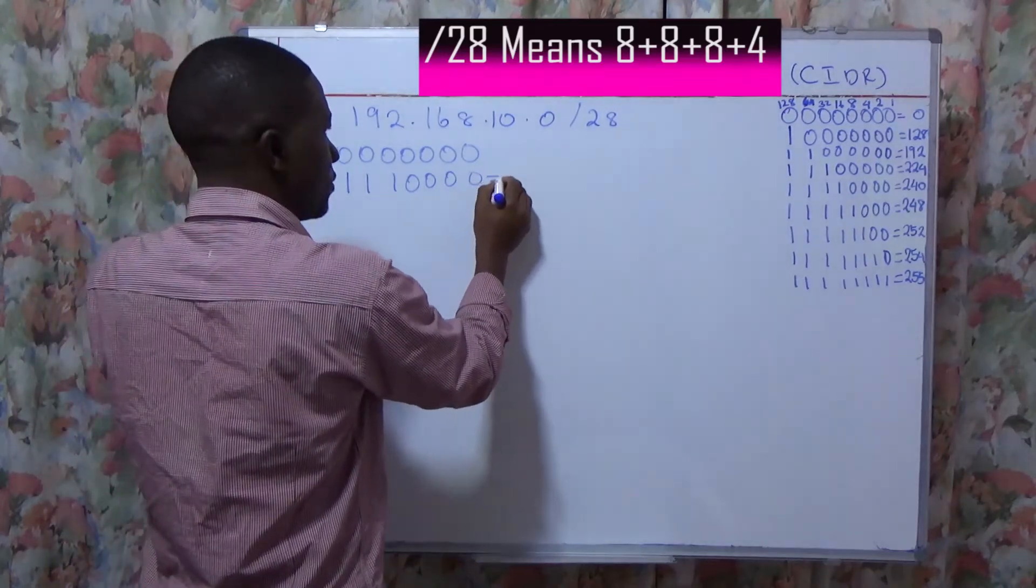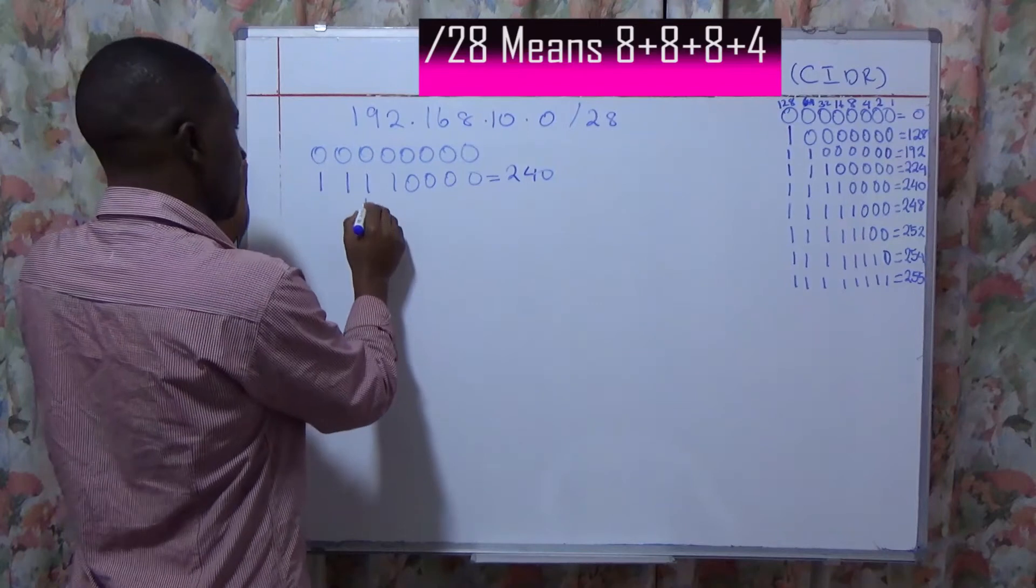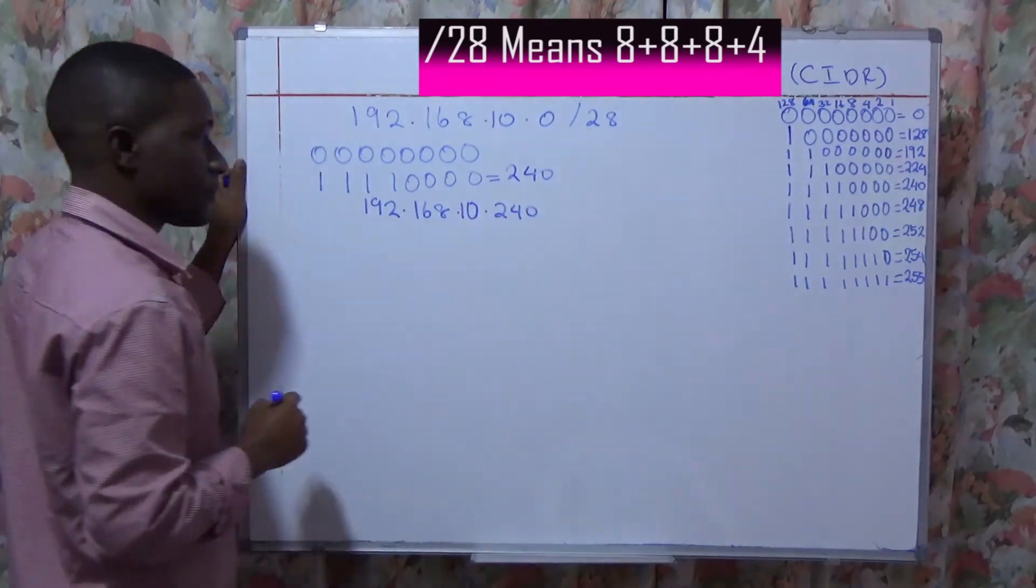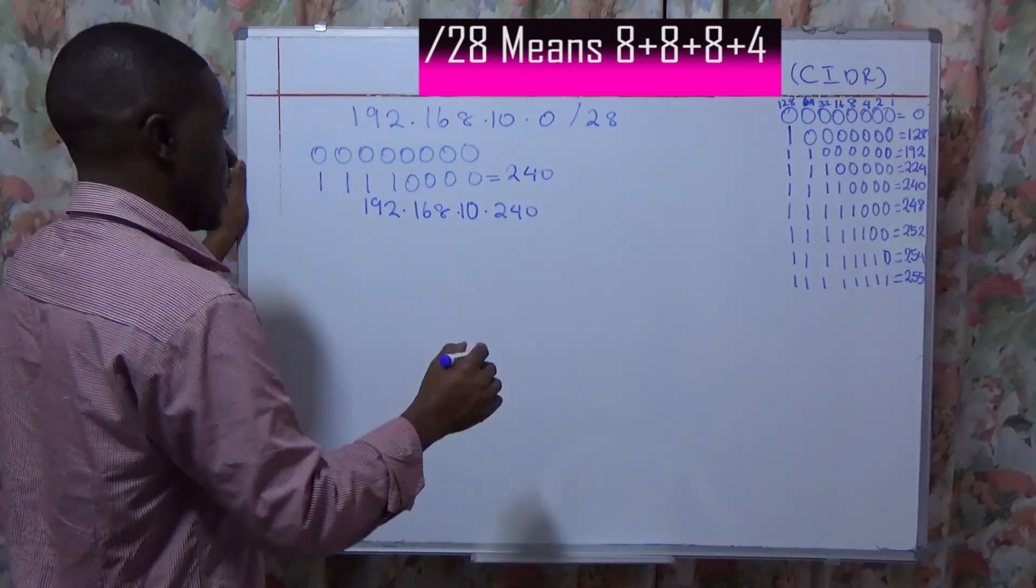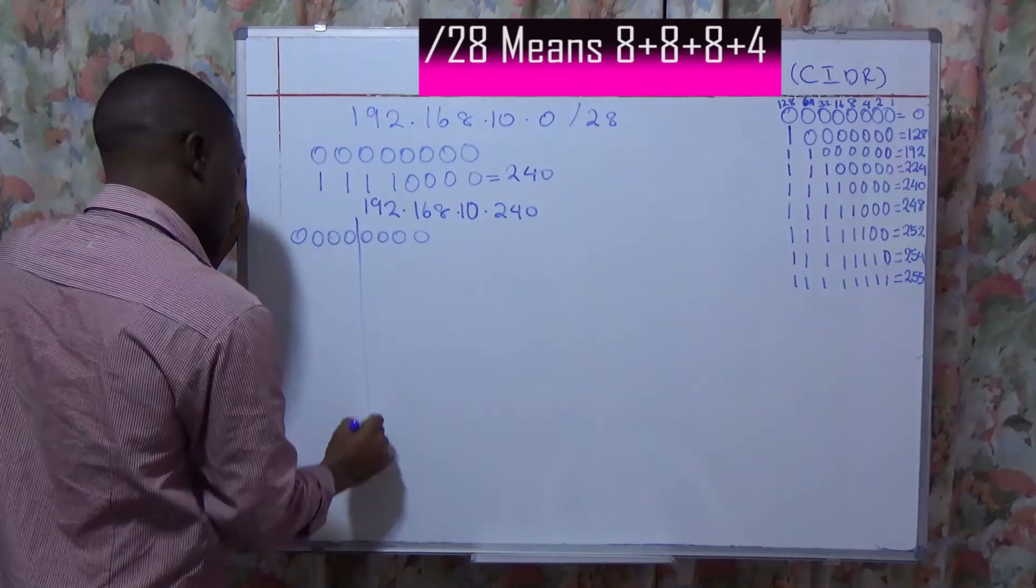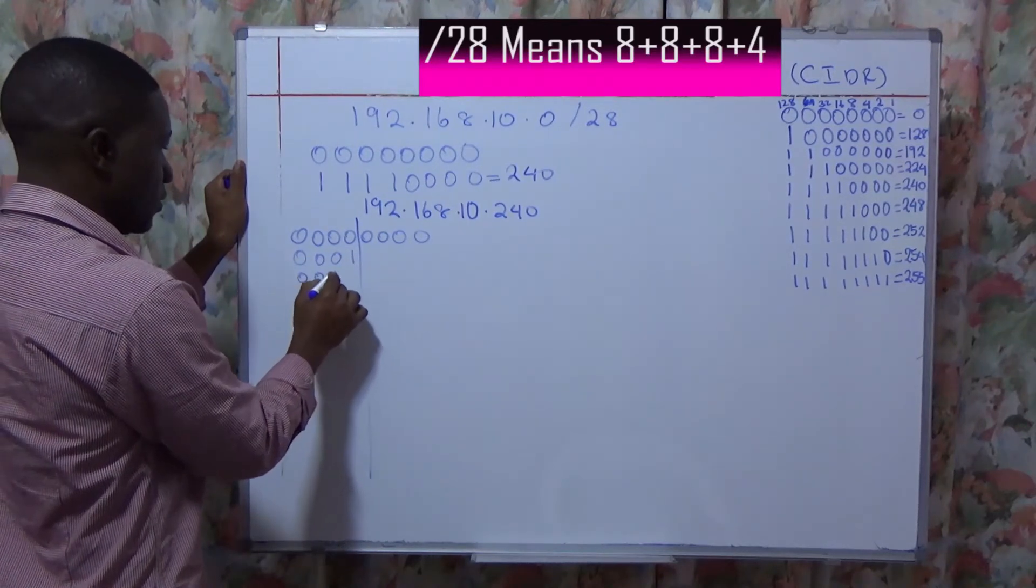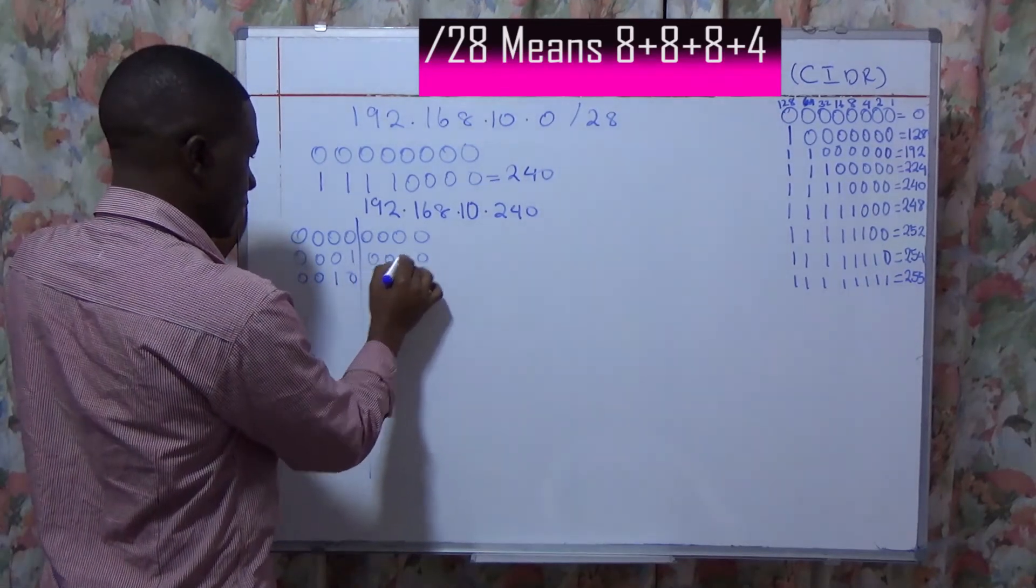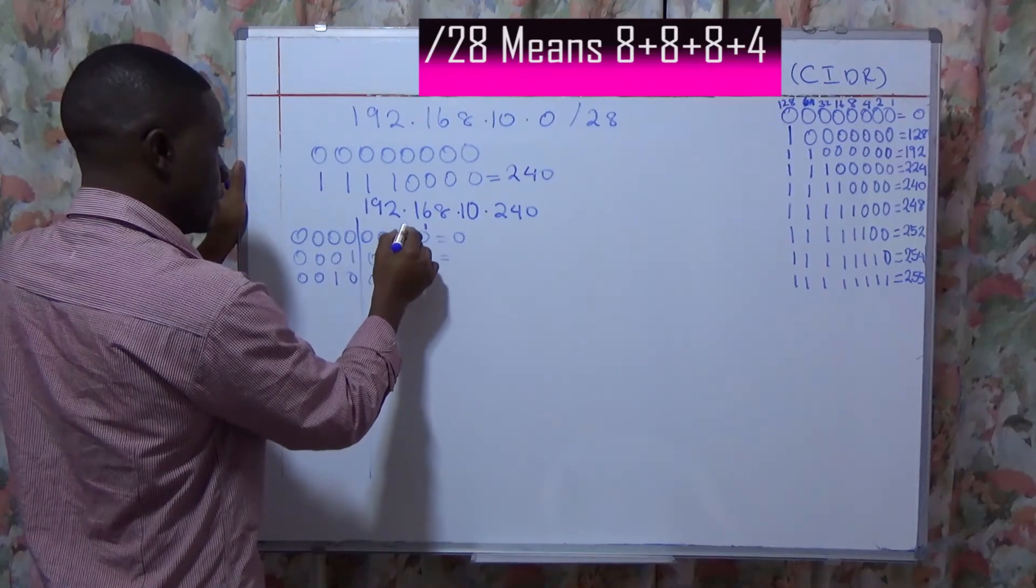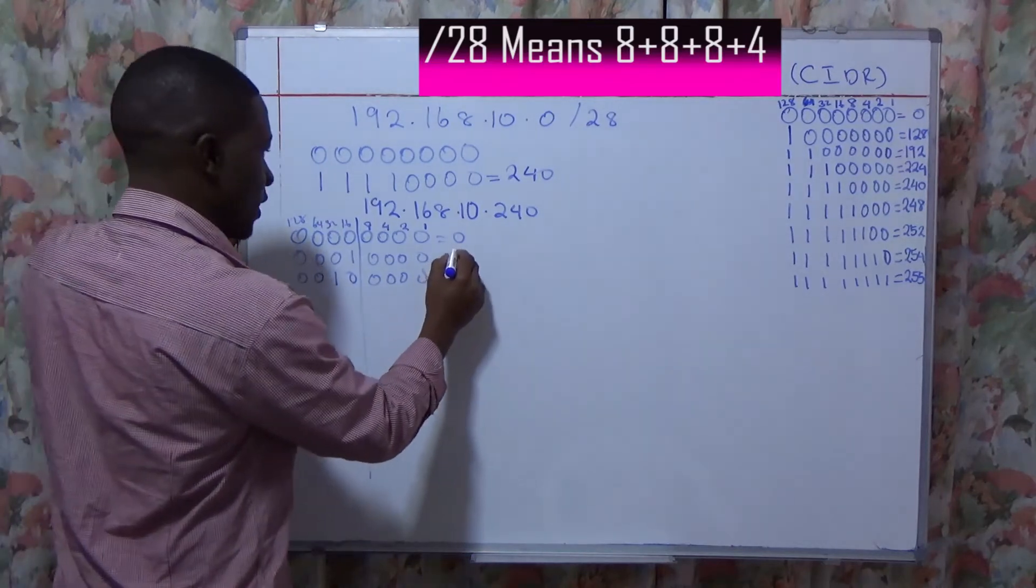And at this level our value will be... this will mean that our subnet mask will be 255.255.255.240. And this is what we are going to do. We convert to binary: this will be 0, 0, 1, 0, and this will be what? 1, 2, 4, 8, 16, 32, 64, 128.